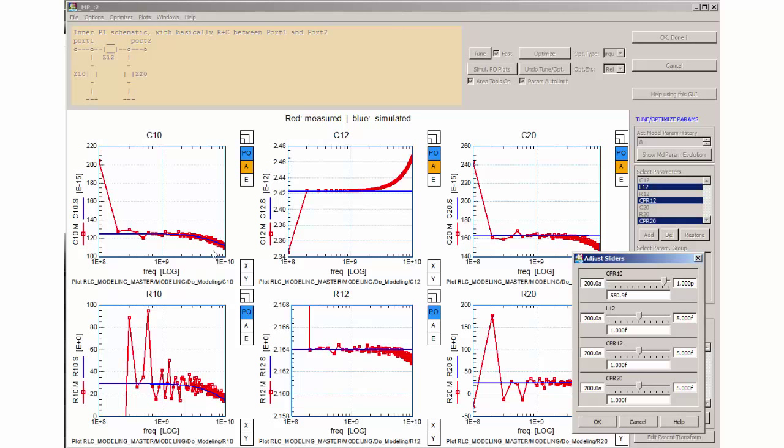I continue with fitting the port 1 to port 2 transmission, what is plots C12 and R12, and tune in CPR12 to fit the traces in plot R12. In order to improve the fitting for high frequencies in the C12 plot, the increase over frequency, I am adding a small inductor in series to C12 to the SPICE netlist and fine tune it.